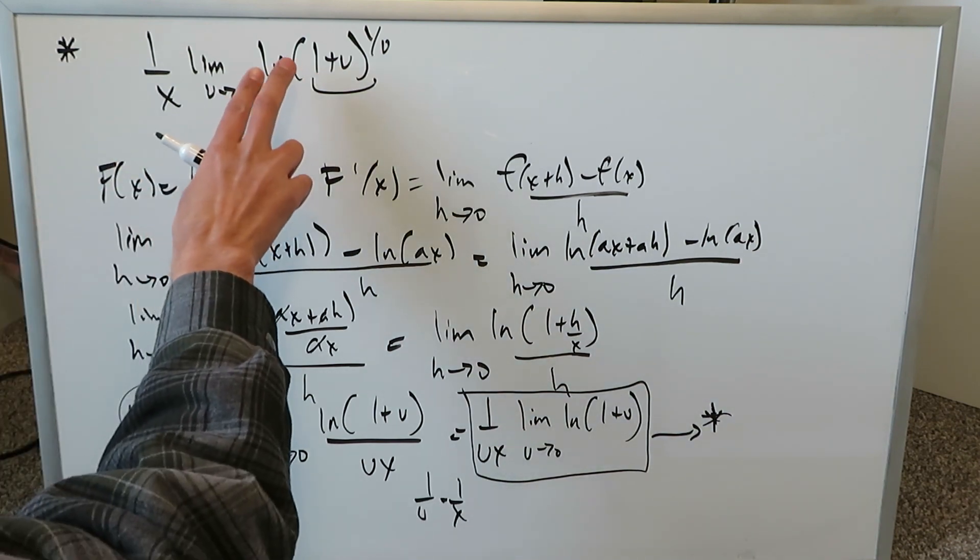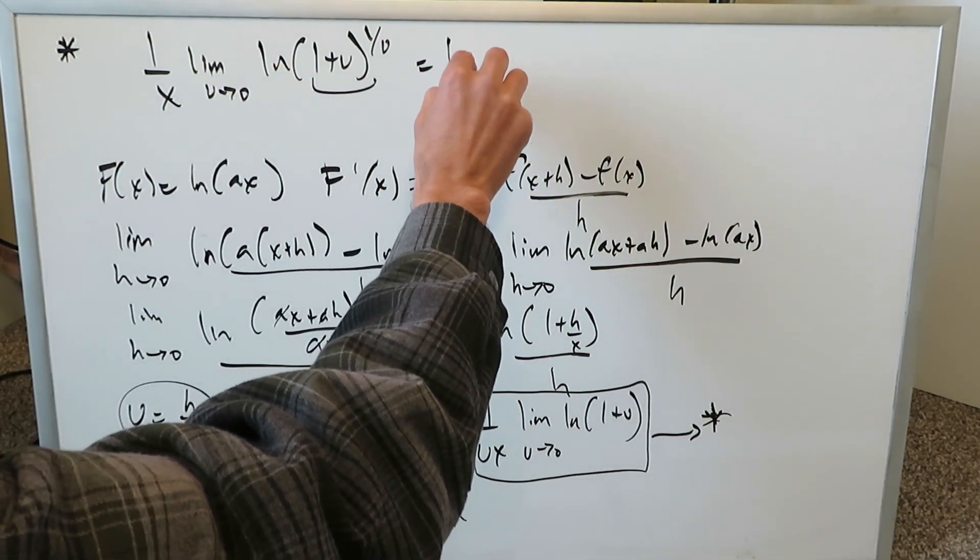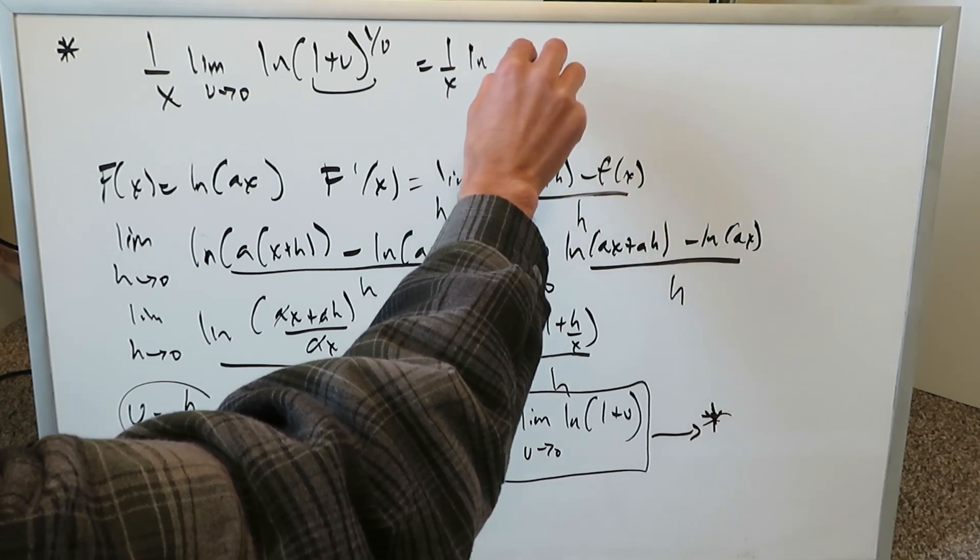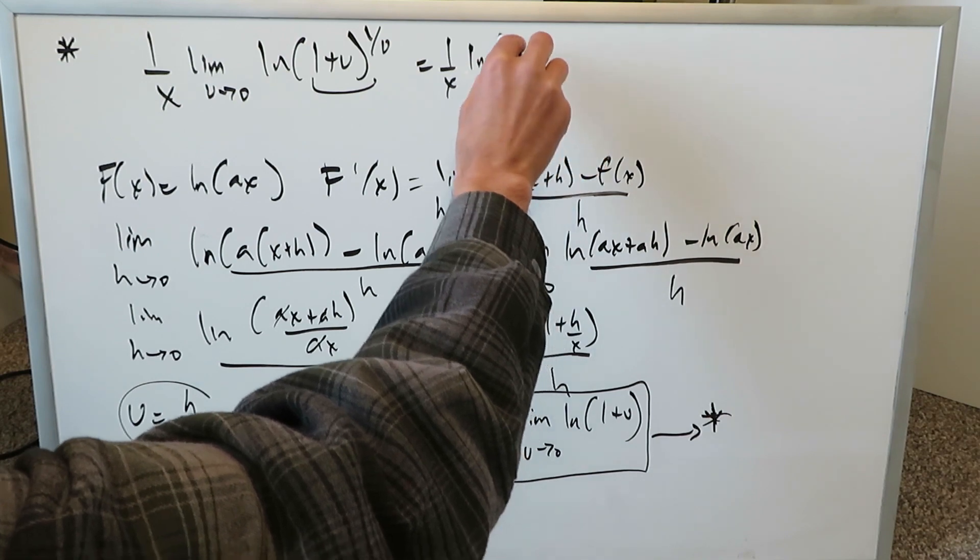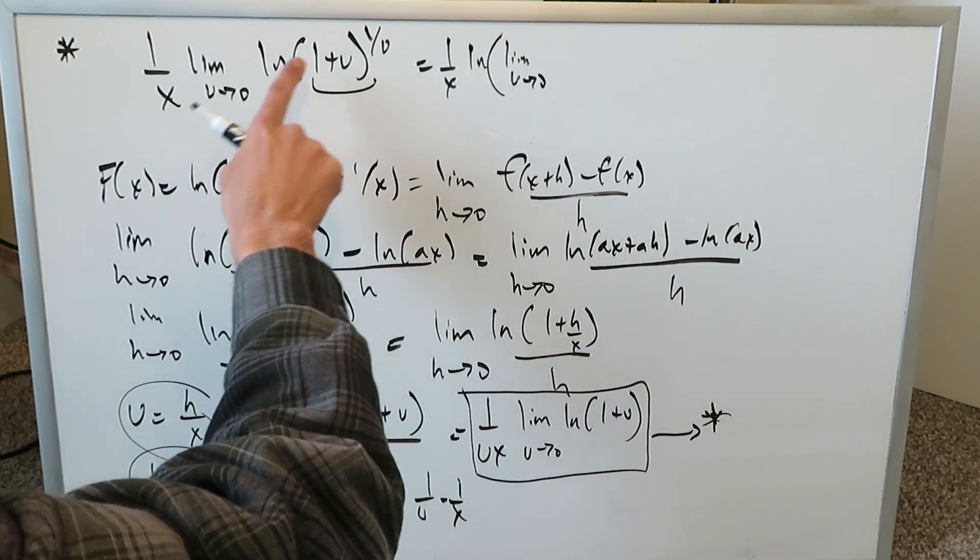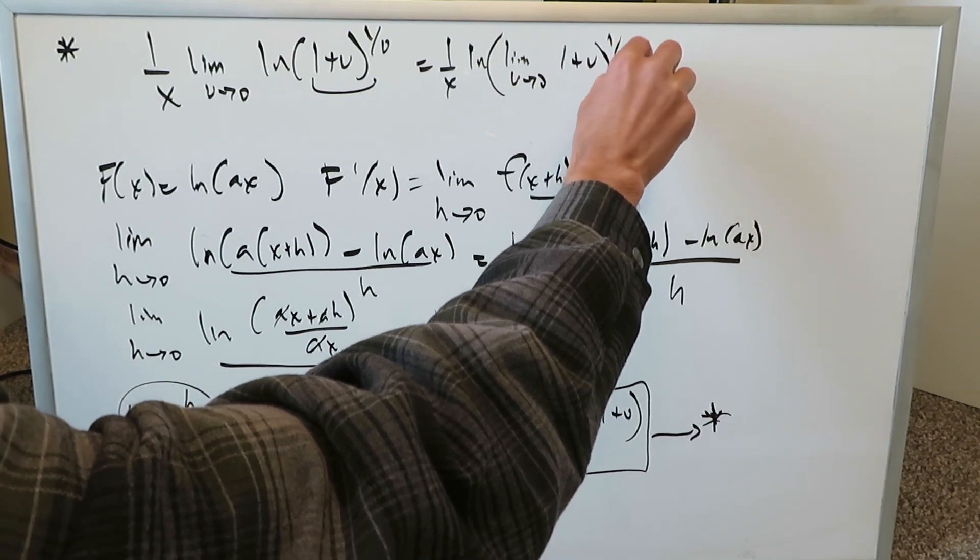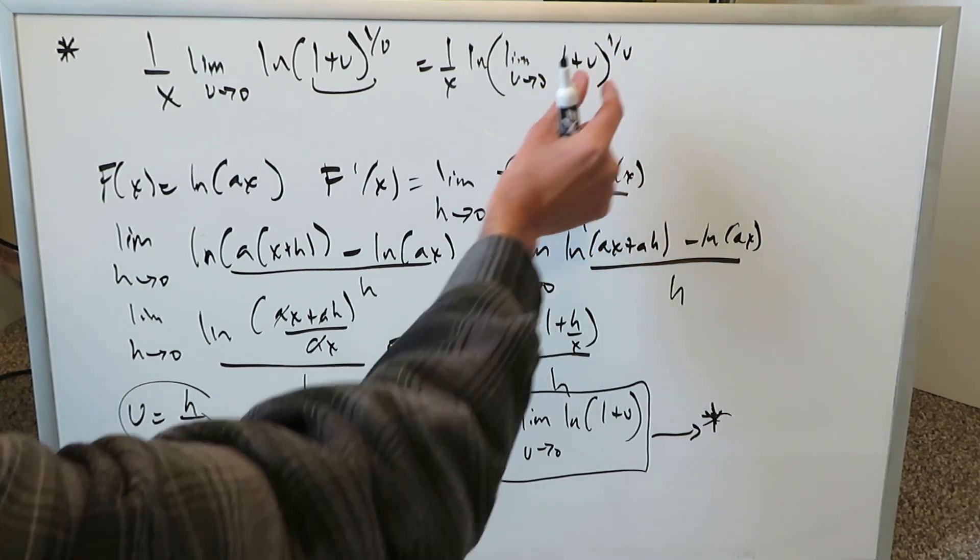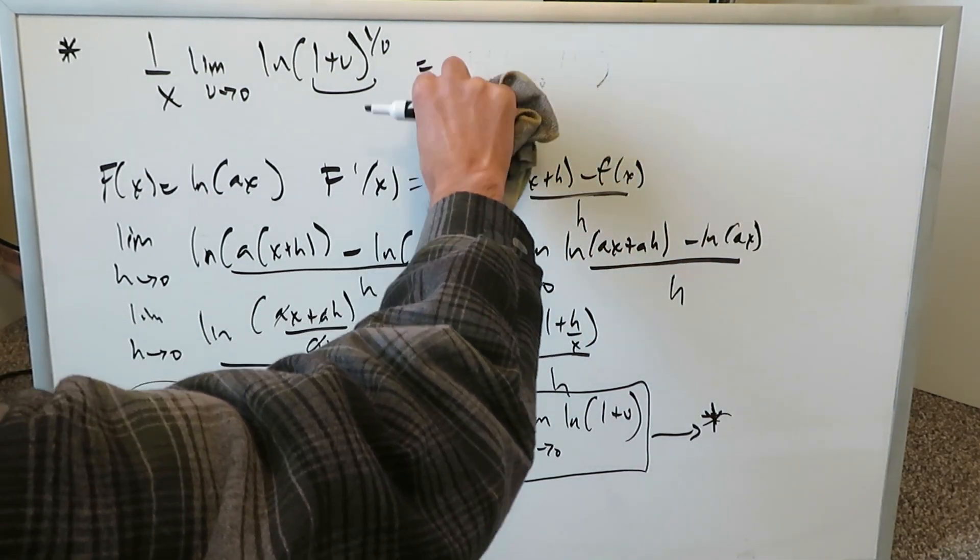You could have even rewritten this entire expression as this and I'll write it but then I'll erase it. I have 1 over x natural log. I have limit as u approaches 0. You see I've brought the limit from outside inside and then I'm really looking at 1 plus u to the power of 1 over u. So we're really looking at this part right over here. Let's erase this and evaluate the specific limit over here.